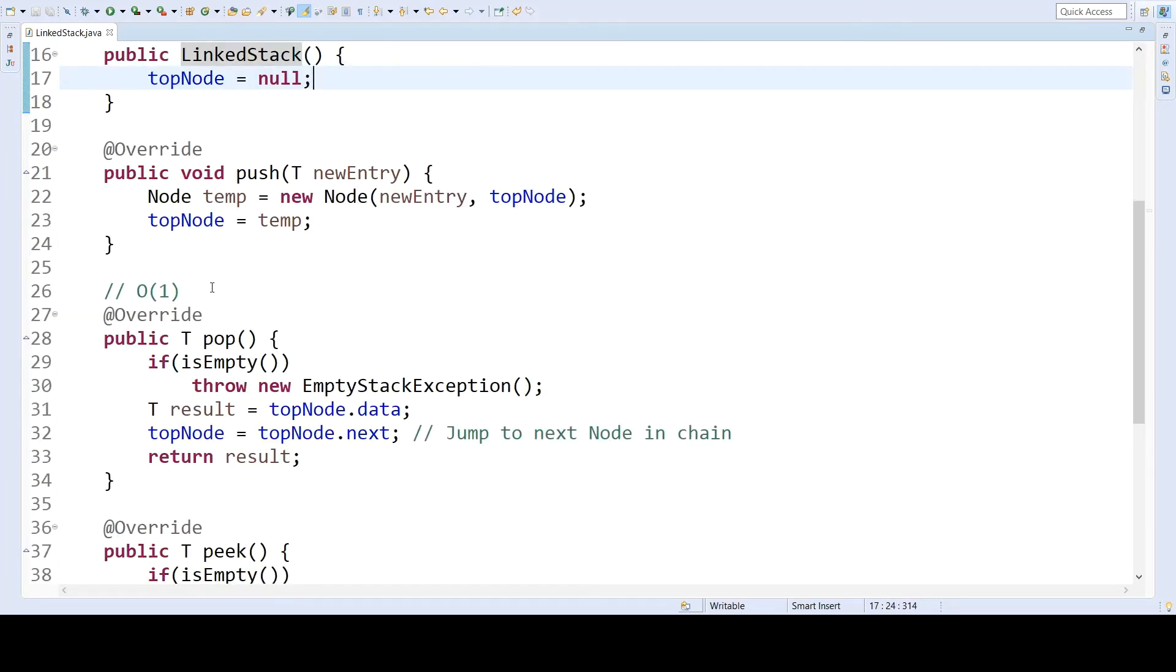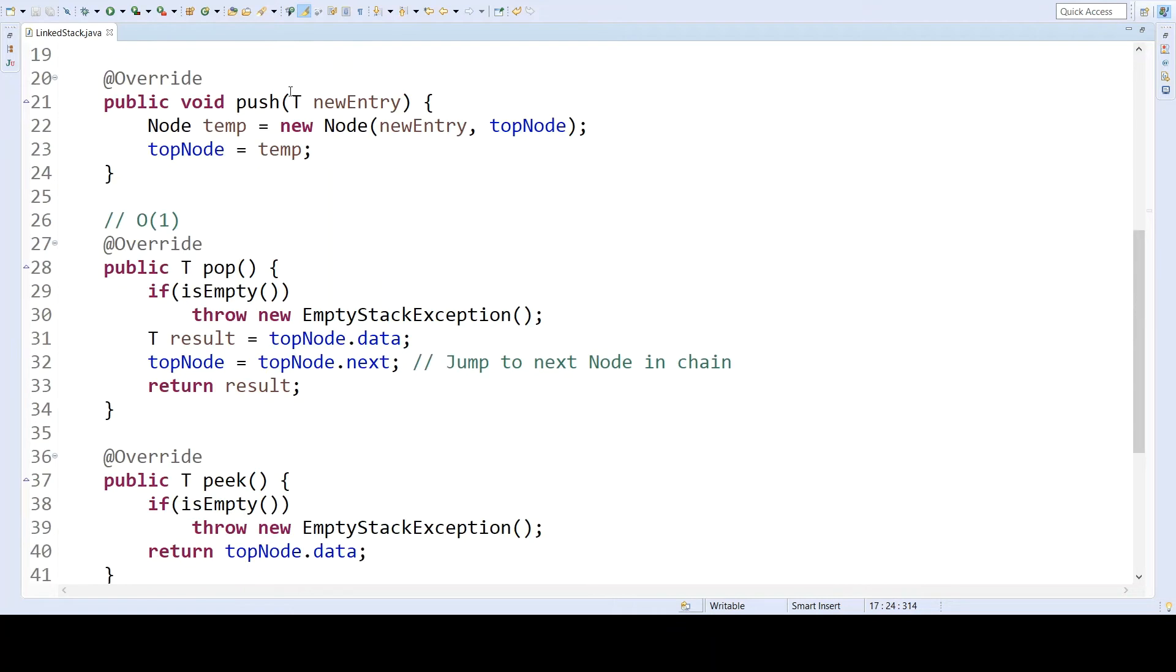Then we have the basic operations of the stack. So push creates a new node, and the new entry is the value that we're pushing on top of the stack. And notice that the entry in the node constructor corresponding to the next node has the current top node assigned to it. This is what makes the new top node point at what the previous top node was. So this top node value is evaluated, we point at it, we assign this to a temp node, but then we immediately assign that to the top node.